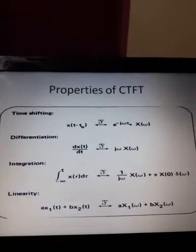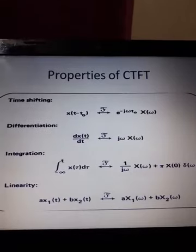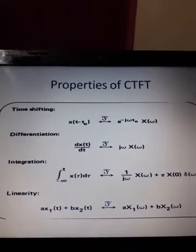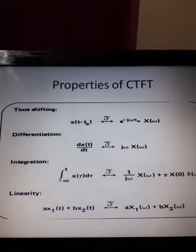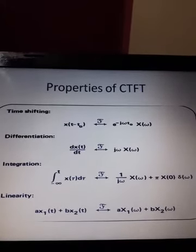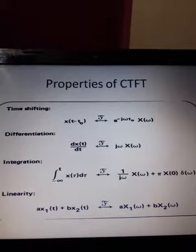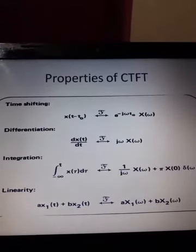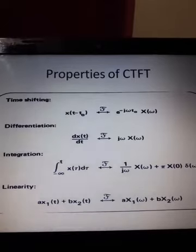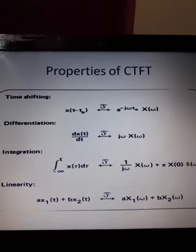Properties of CTFT. The first property is Linearity. CTFT is a linear transformation tool used to transform a signal from the time domain to the frequency domain. For two continuous-time signals x1(t) and x2(t) with transforms X1(jω) and X2(jω) respectively, the linearity property states: CTFT of [A·x1(t) + B·x2(t)] = A·X1(jω) + B·X2(jω).